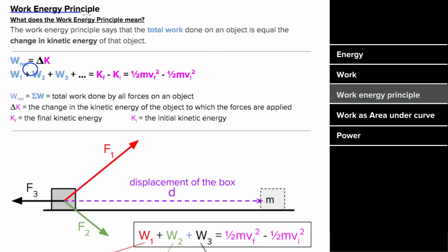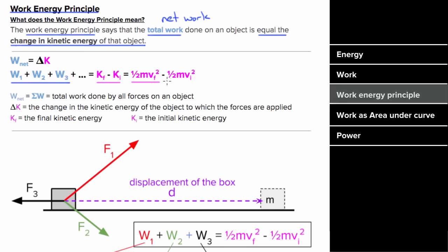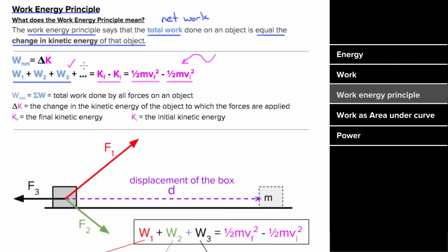What does the work-energy principle mean? The work-energy principle states that the total — or net — work done on an object is going to be equal to the change in kinetic energy of that object. So if you add up all the work done by all forces on an object, that's got to equal the change in kinetic energy, which is one-half mv-final squared minus one-half mv-initial squared. This is a really handy way to find how the speed of an object changes if you can determine the net work on an object.